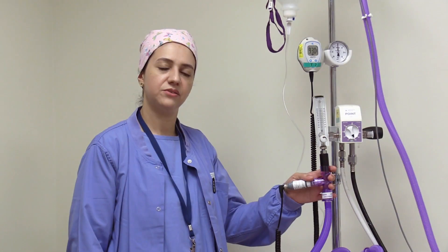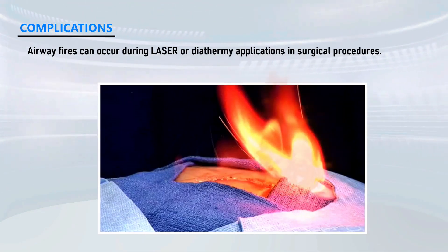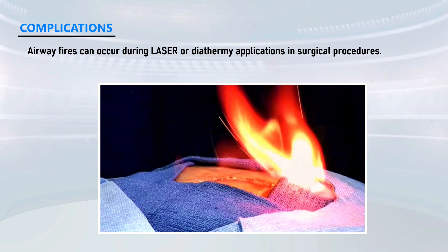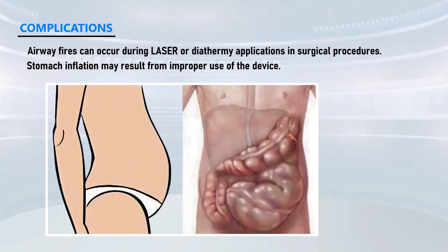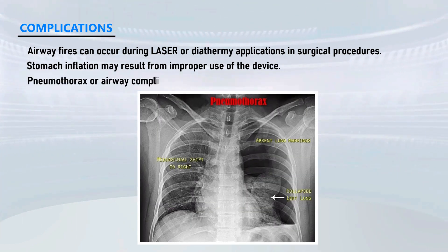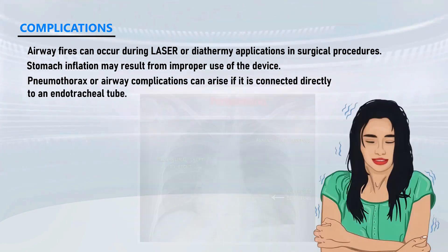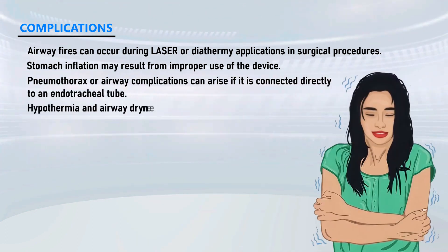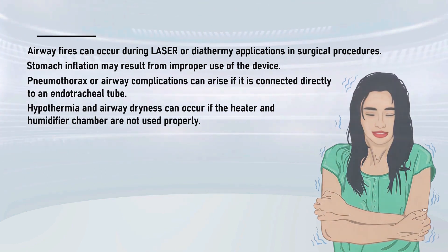Regarding complications: airway fires can occur during laser or diathermy applications in surgical procedures. Stomach inflation may result from improper use of the device. Pneumothorax or airway complications can arise if it is connected directly to an endotracheal tube. Hypothermia and airway dryness can occur if the heater and humidifier chamber are not used properly.